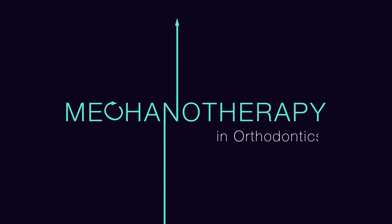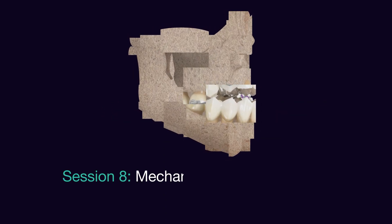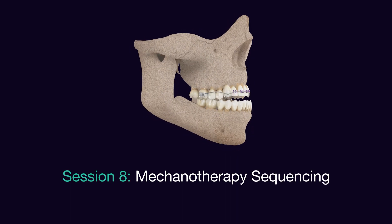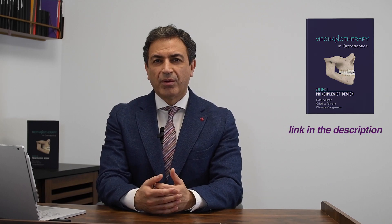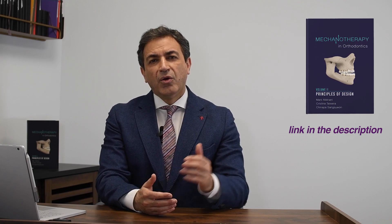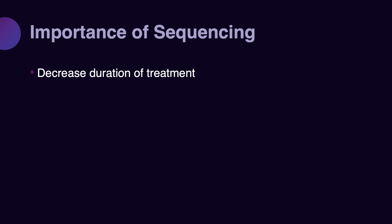After you diagnose your patient's problem, made your problem list, and start to deliver your mechanotherapy, you need to think from where to start and where to end — what would be the sequence of delivering treatment and what are the factors that control that sequencing. First, proper sequencing can decrease the duration of treatment significantly. If you randomly provide a treatment that moves things in one direction while moving things in the opposite direction, it can increase the duration of treatment significantly.